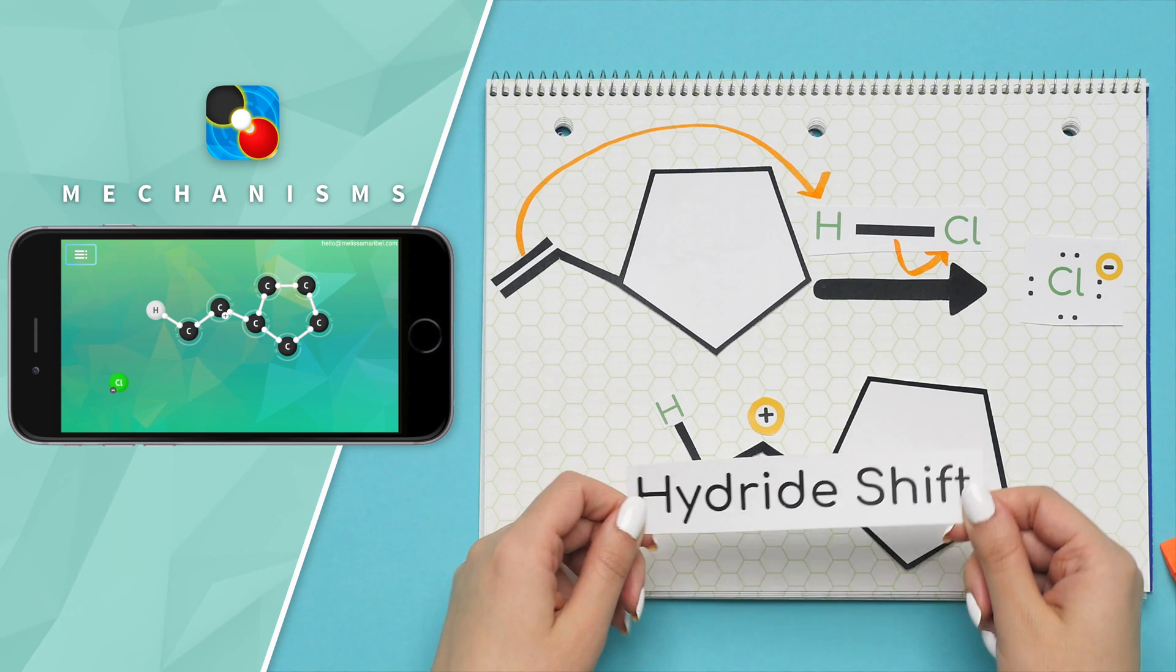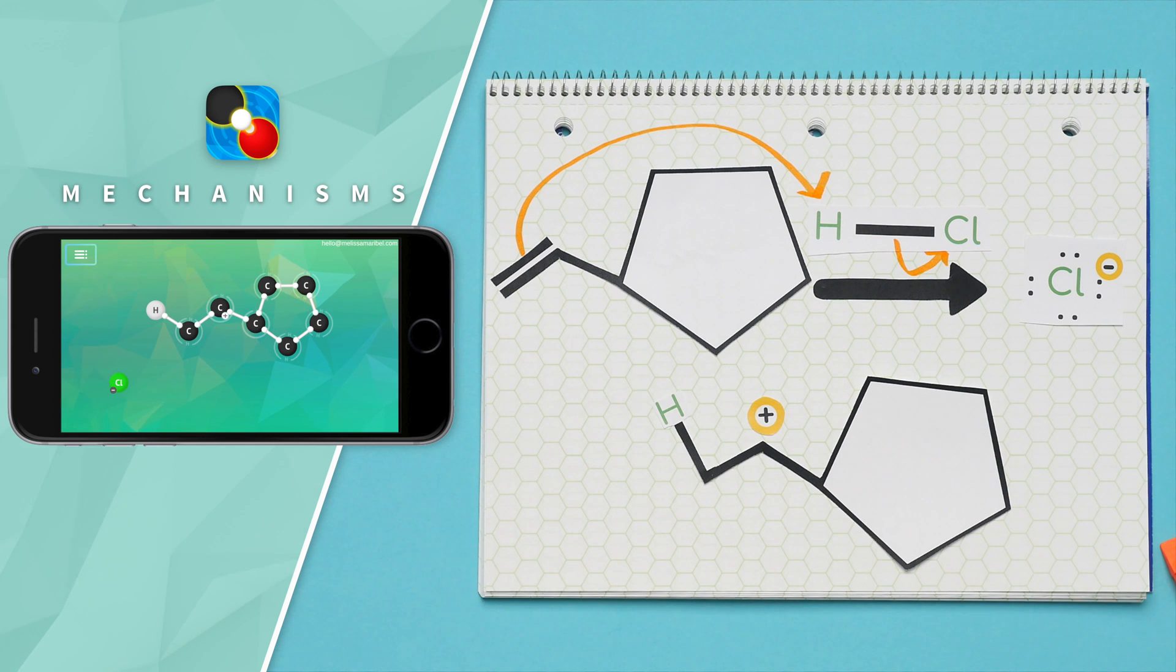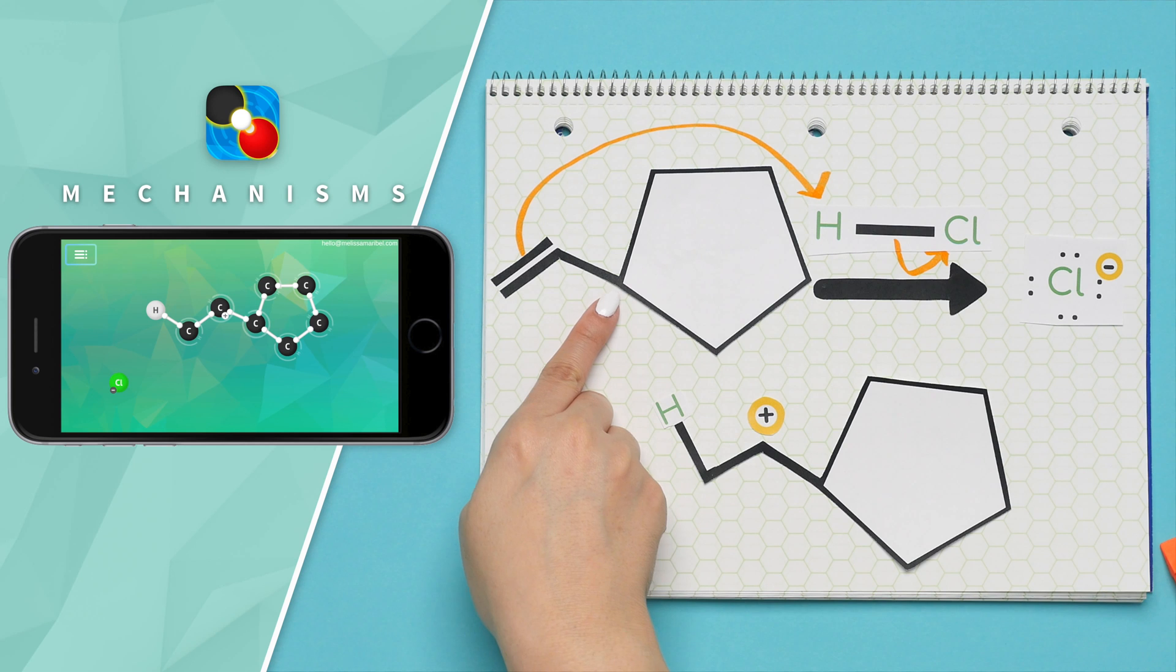In this case, we need to do a hydride shift to give us a more stable carbocation. We know to do this because our clue here was that if a double bond is next to a tertiary carbon, we will do a hydride shift.